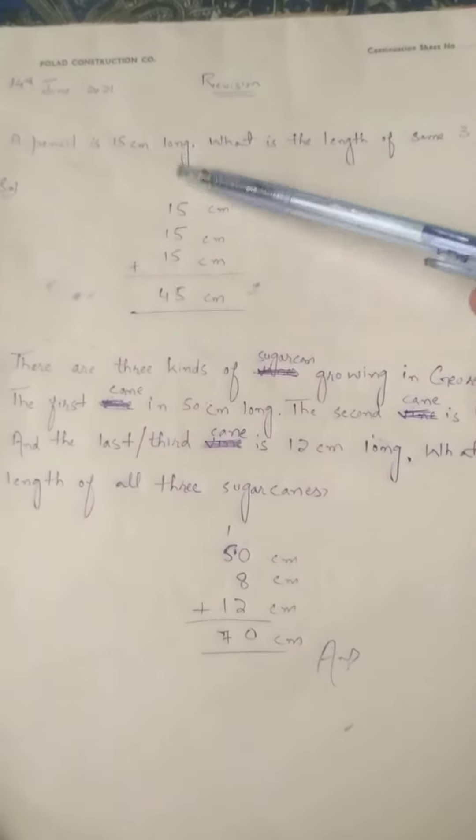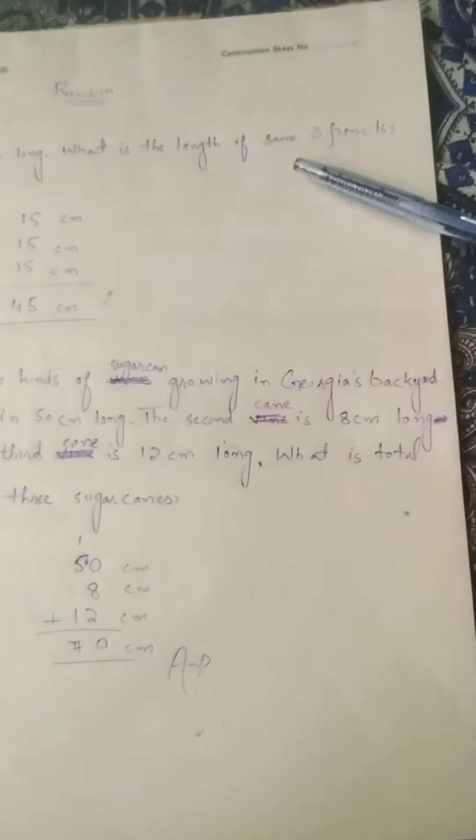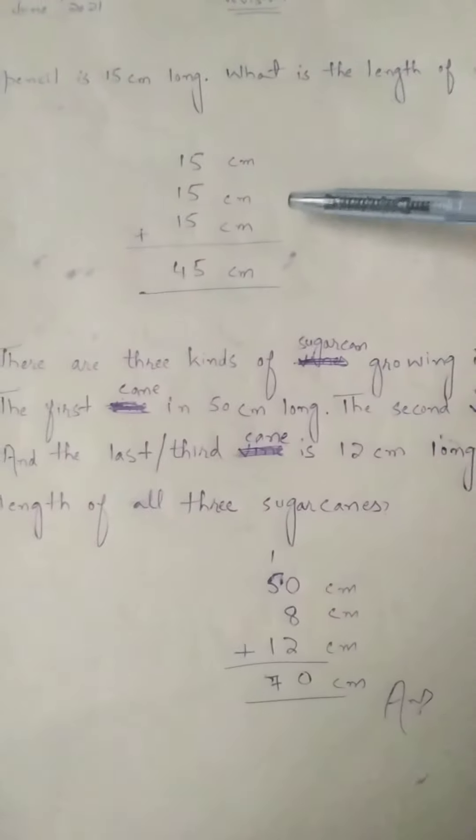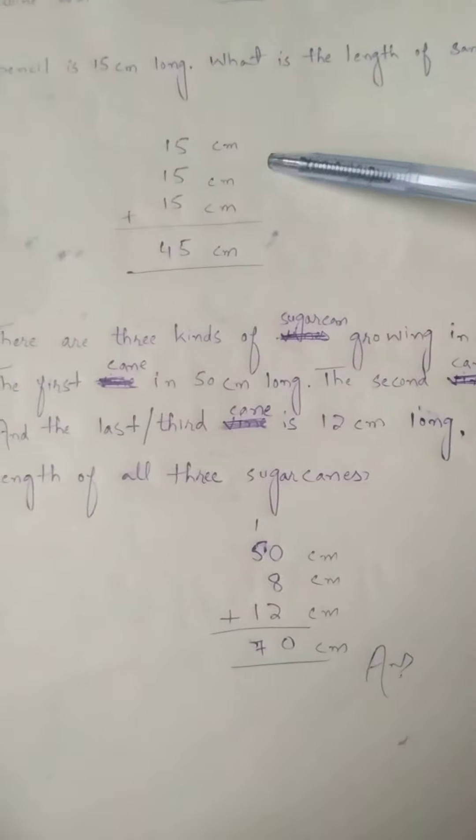A pencil is 15 centimeter long. What is the length of the same three pencils? If you have the pencil which is 15 cm long, we want to find out how three pencils of the same length. Three pencils of the same length means we will add three times 15.